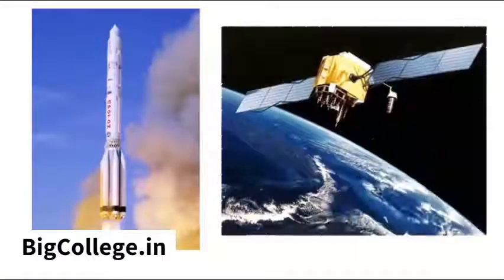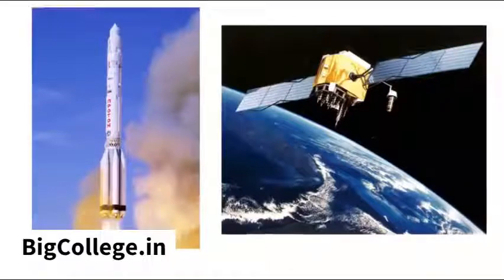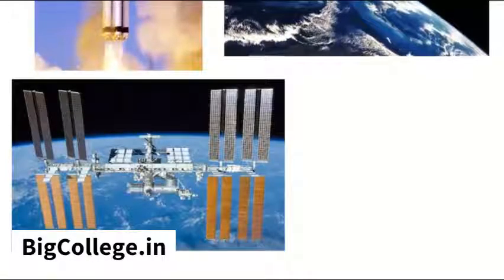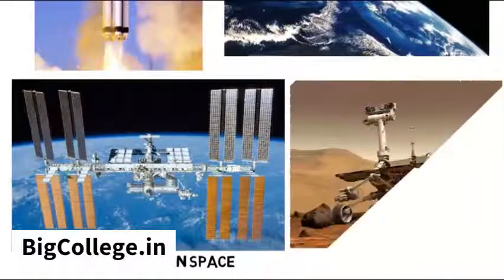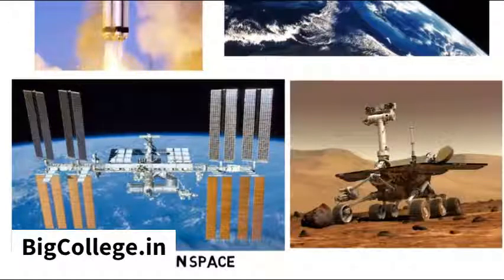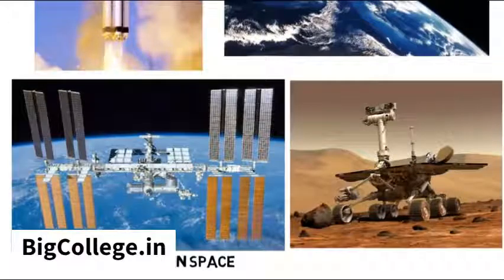Astronautics would include designing rockets and satellites, or specific things like working on the International Space Station, which is basically one big science lab in space that astronauts stay and perform experiments in, or maybe the Mars rover that is gathering data from Mars without the need for a human to be there.